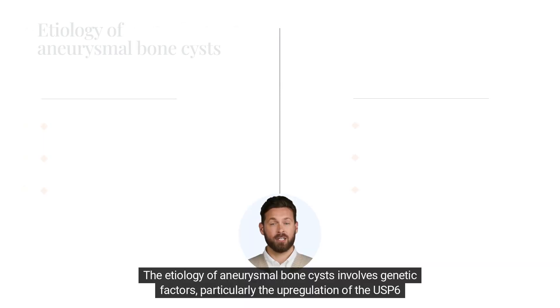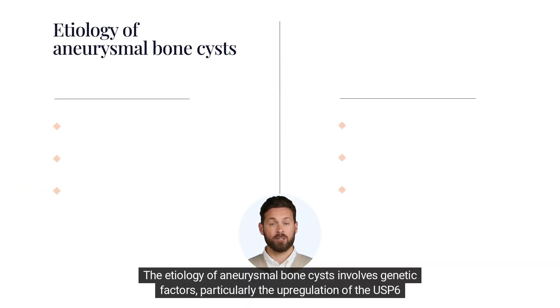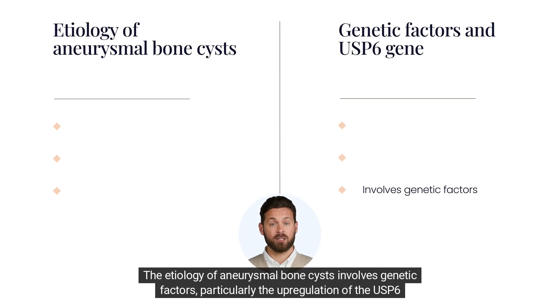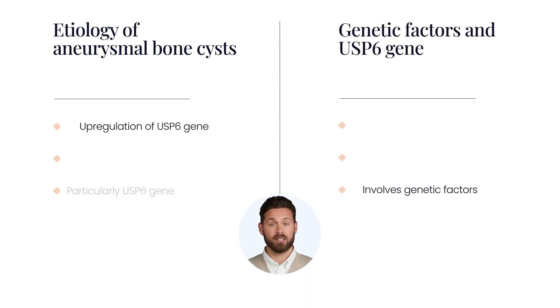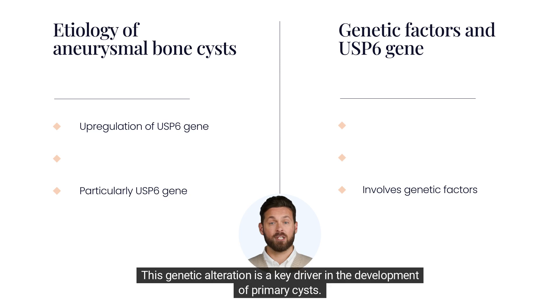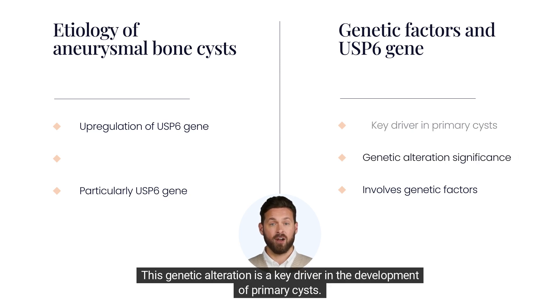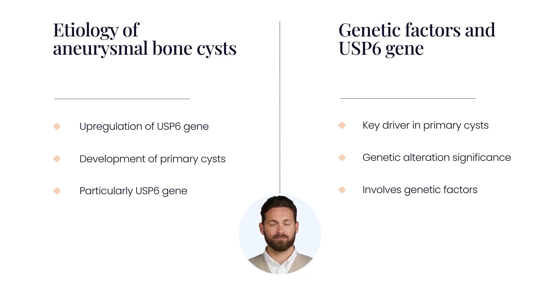The etiology of aneurysmal bone cysts involves genetic factors, particularly the upregulation of the USP6 gene. This genetic alteration is a key driver in the development of primary cysts.